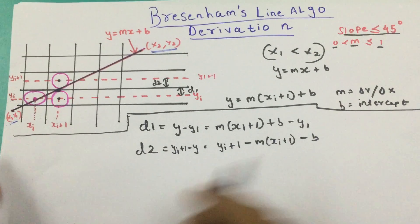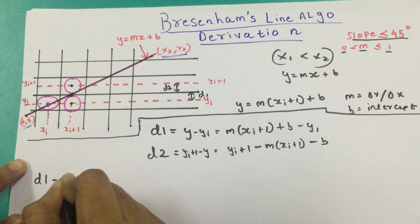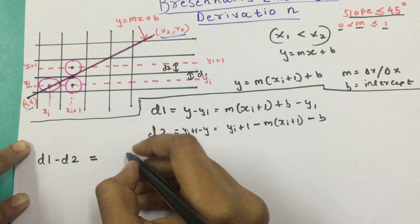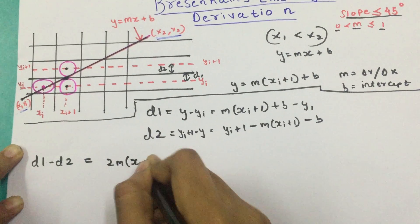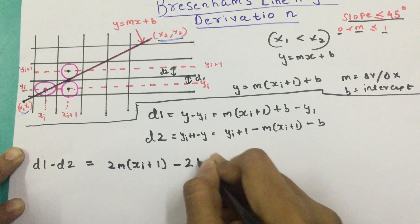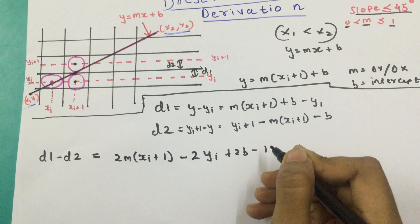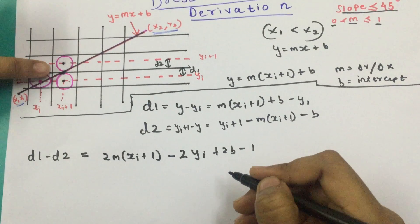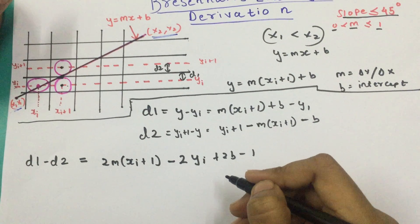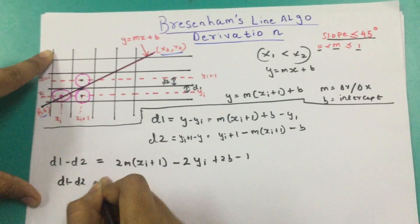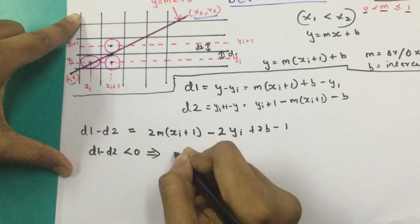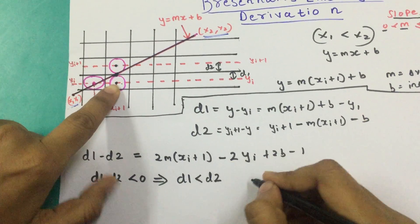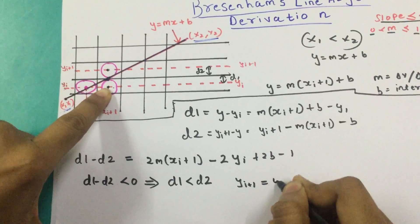Here we define a new term which is the difference d1 minus d2. Upon calculating, you'll get 2m(xi plus 1) minus 2yi plus 2b. This is simple math — you should be able to get it if you try it yourself. So why did we subtract d1 and d2? We need to find the pixel closest to the line. If d1 minus d2 is less than 0, then d1 is lesser than d2, and we choose pixel yi — so the next pixel yi+1 will be yi itself.